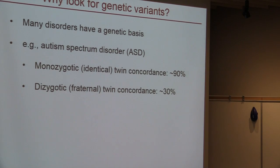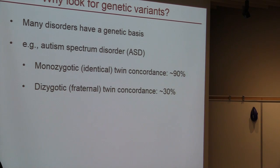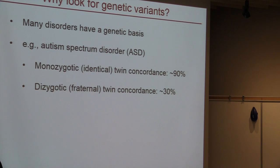Why do we want to find genetic variants in general? The obvious answer is that many diseases have a strong genetic basis, and looking for genetic variants is a common strategy for understanding the genetics of these diseases. More specifically, at TCAG, for the last few years, we've been interested specifically in autism.